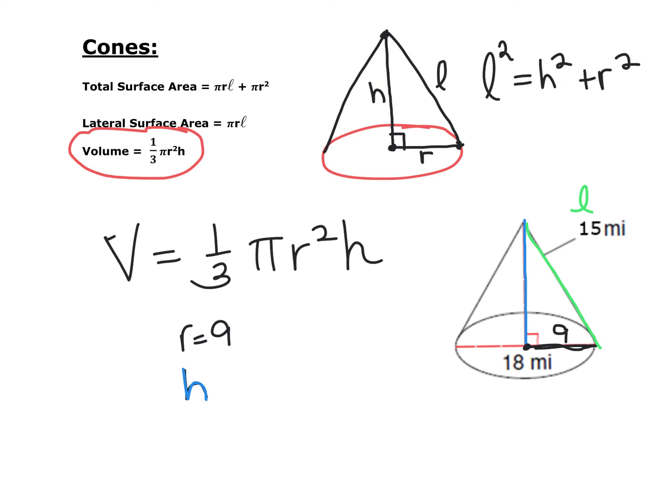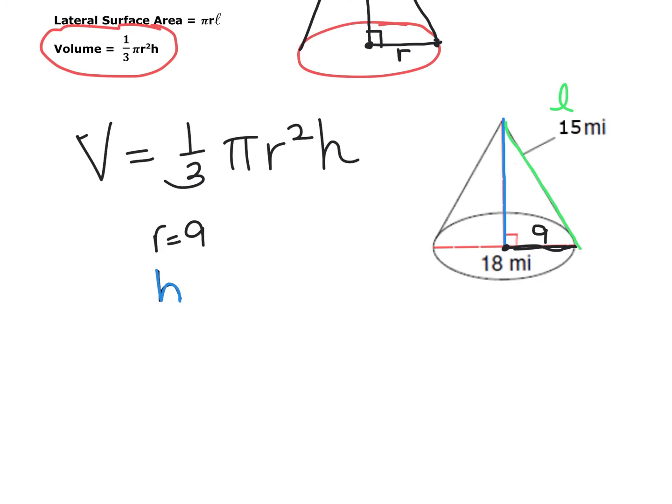This is a right triangle and the 15 is the hypotenuse. So we have 15 squared is equal to h squared plus 9 squared. So 225 equals h squared plus 81. We subtract 81 and we get 144. And the square root of 144 is 12. So our h is 12.